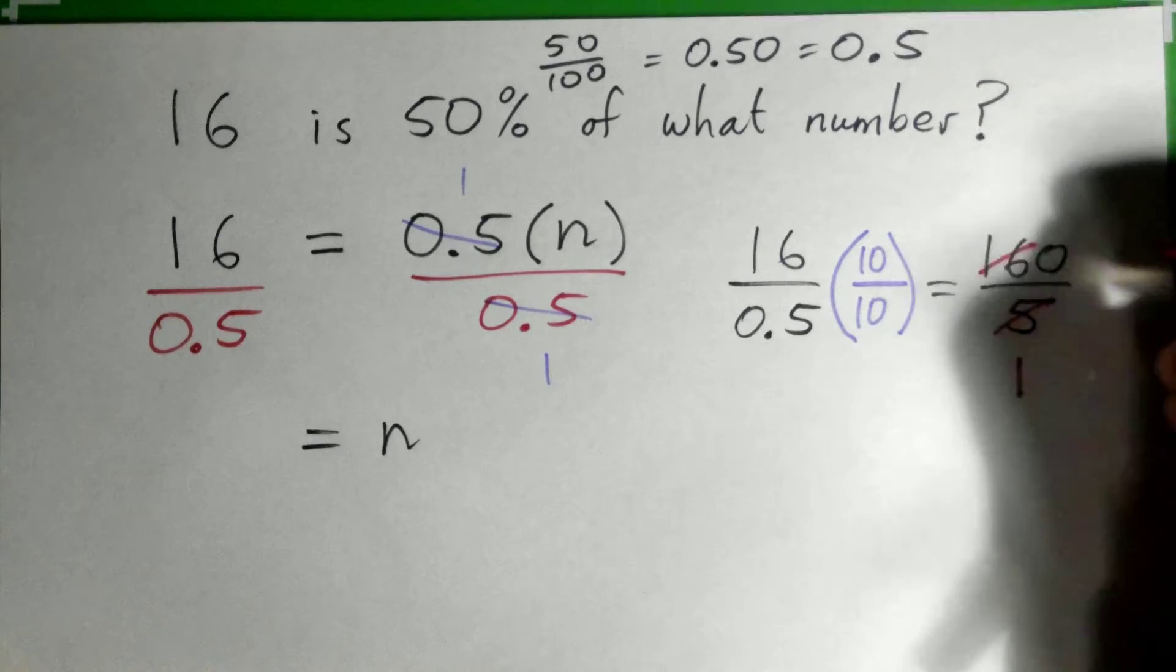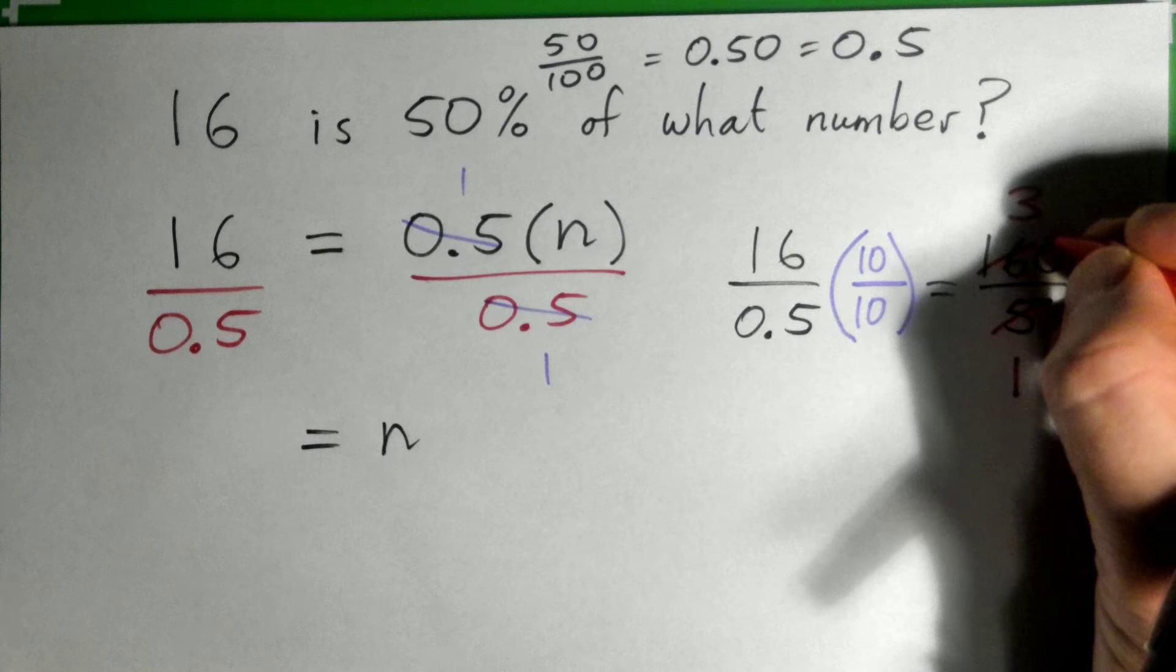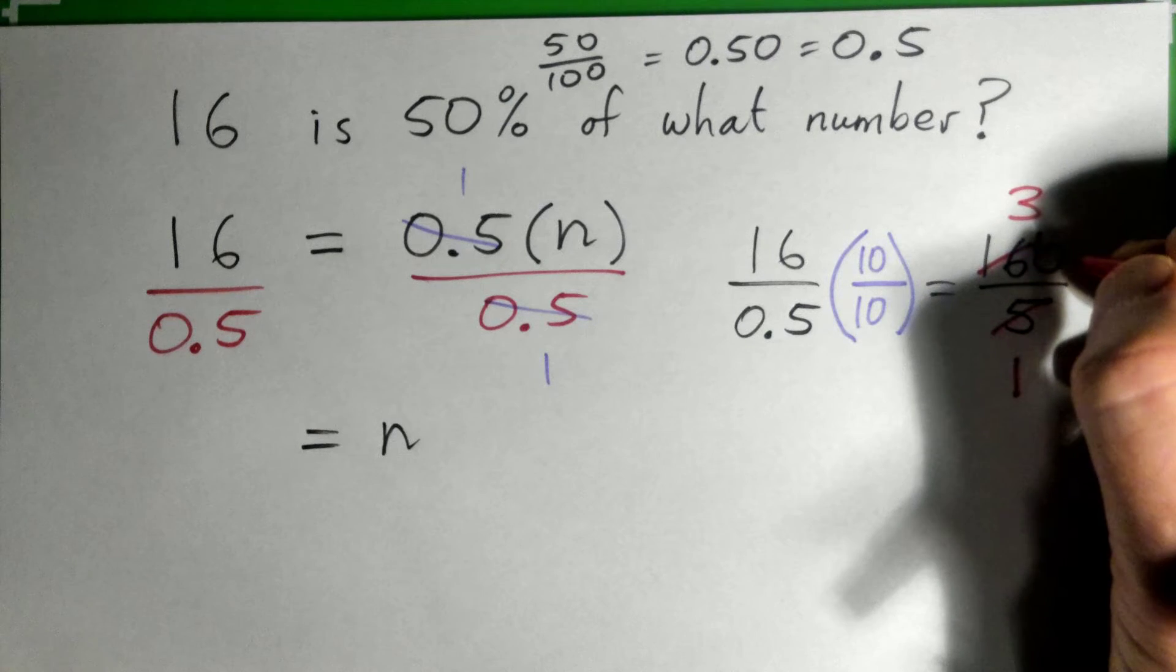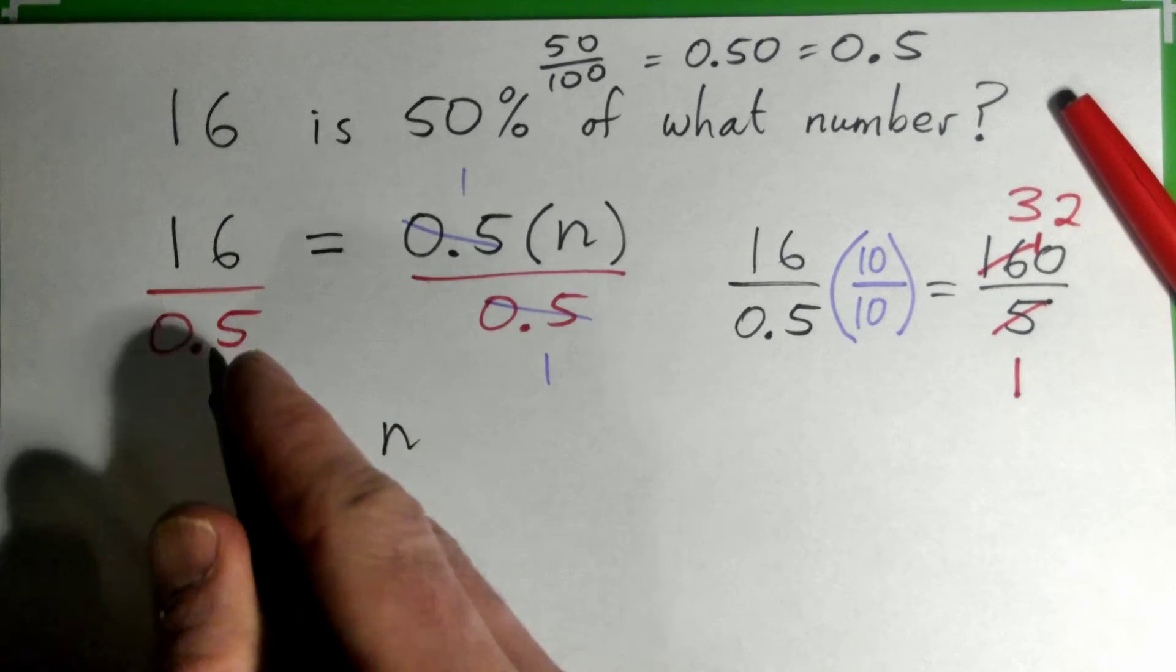5 into 5 goes once, 5 into 16 three times, remainder 1. 5 into 10 goes twice.